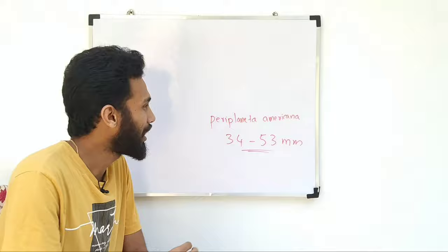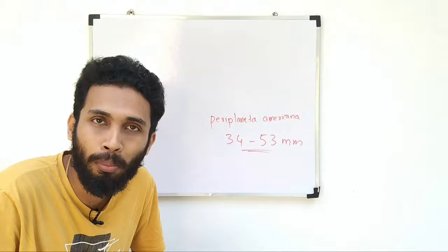34 to 53 mm. It's called Periplaneta Americana. If we talk about this cockroach size...